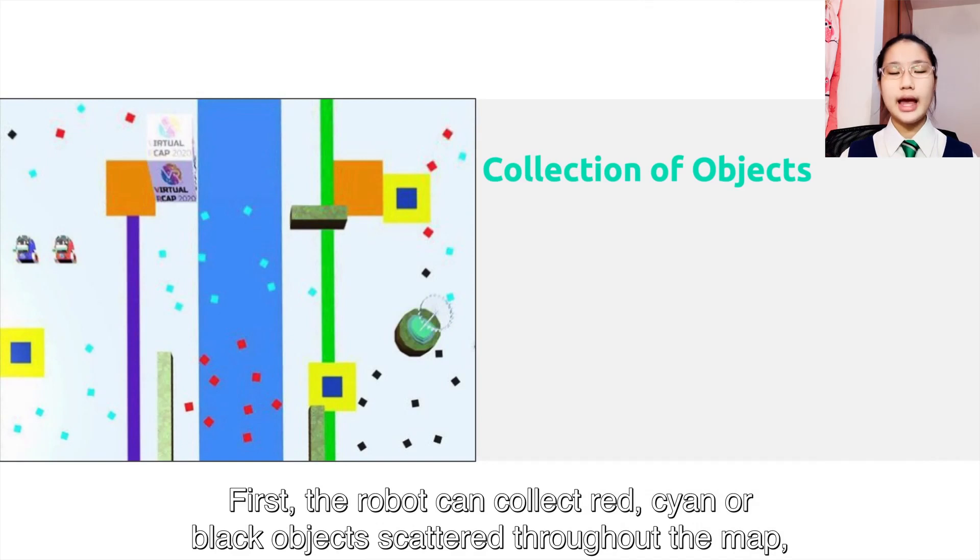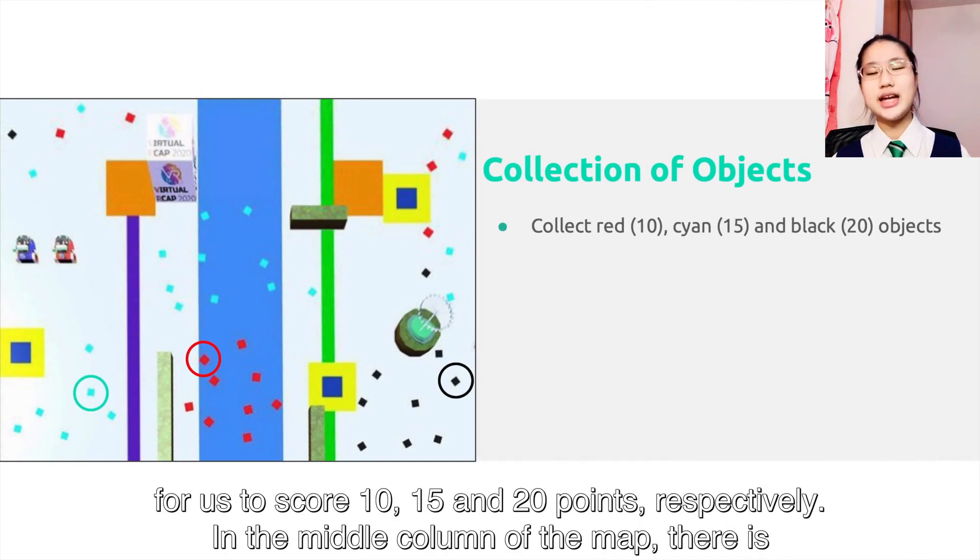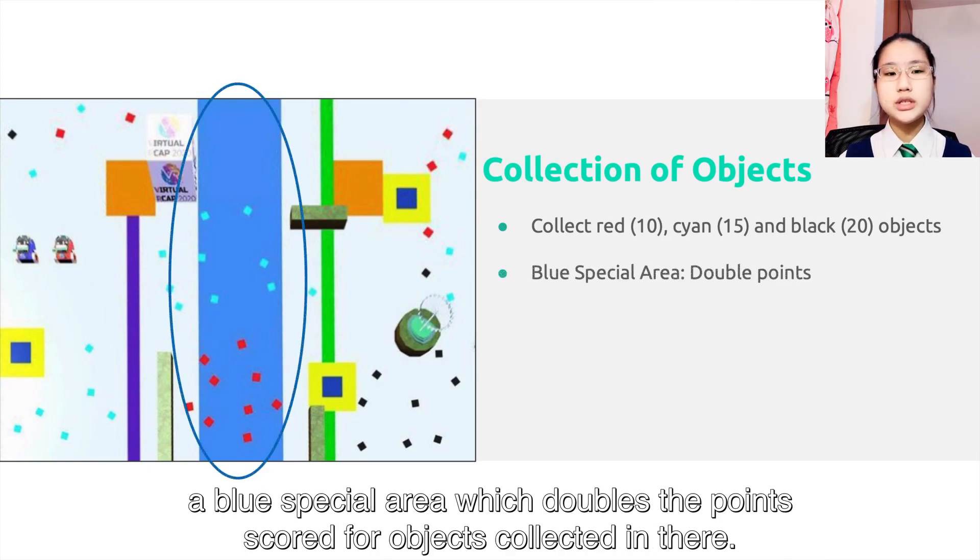First, the robot can collect red, cyan, and black objects scattered throughout the map to score 10, 15, and 20 points respectively. In the middle column of the map, there is a blue special area which doubles the points scored for objects collected in there.